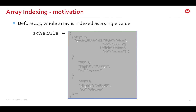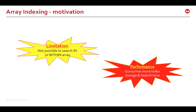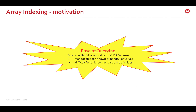In earlier versions, arrays can be indexed but as one single value. As you can see in this example, all flight schedules information in this array is considered opaquely as one large scalar value. This has a few undesirable effects. First, we cannot search for finer data in or within the array. Performance is hurt because even if we are interested in only a subset of the array data, the whole array is indexed, which takes more index storage space and search time. It is also difficult to query, especially when the array has an unknown or large list of values, because the whole array value must be specified in the WHERE clause of a SELECT or DML statement.